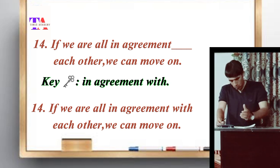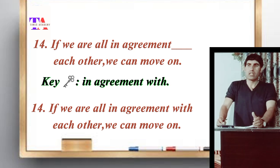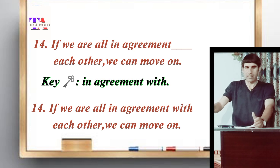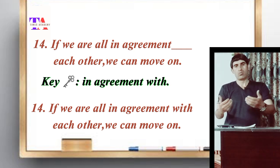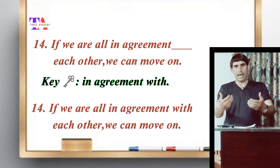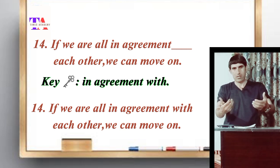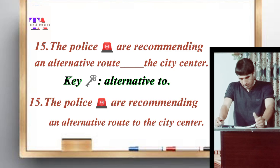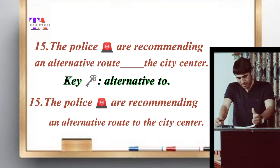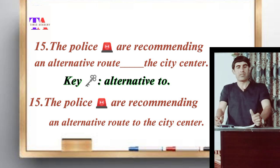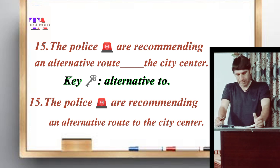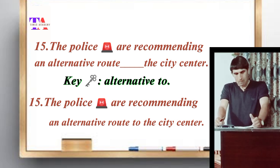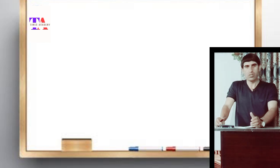Number fourteen: 'If we are all in agreement with each other, we can move on.' Here we have a complex preposition case — 'in agreement with'. It is a complex preposition where we have more than one word in a phrase: in agreement with. Number fifteen: 'The police are recommending an alternative route to the city center.' Here 'alternative' takes the preposition 'to' — alternative to the city center.